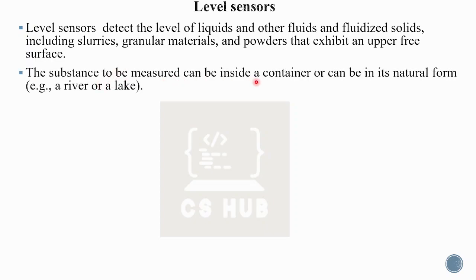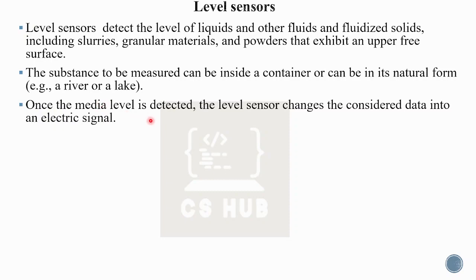The substance to be measured can be inside a container or can be in its natural form, such as a river. You can use these sensors with or without a container. Once the media level is detected, the level sensor changes the collected data into an electrical signal.